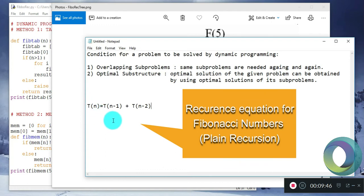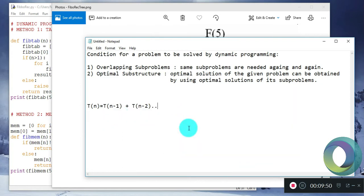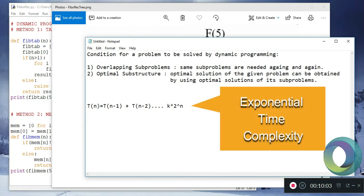If you continue solving this, placing the values, you will find that the complexity is some constant multiplied by 2 raised to the power n. This is known as an exponential time complexity.